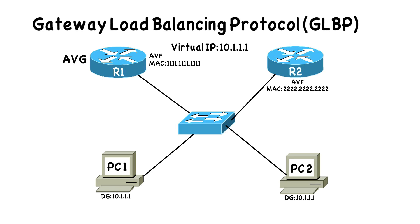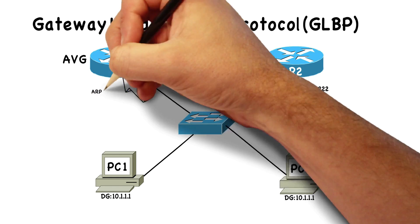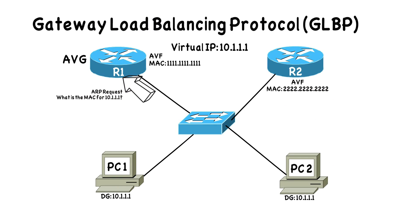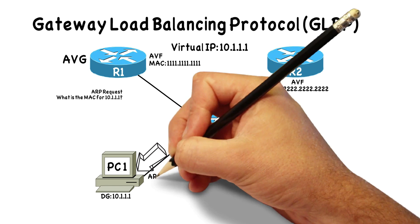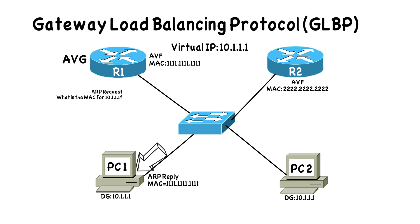To demonstrate how it works, consider PC1 on screen. It's going to send an ARP request up to router R1, because R1 in this example is acting as the AVG — the Active Virtual Gateway. That ARP request asks: what is the MAC address corresponding to 10.1.1.1, PC1's default gateway? R1, acting as the Active Virtual Gateway, responds saying the MAC address for 10.1.1.1 is 1111.1111.1111 — obviously a made-up MAC address to make this easier to visualize. It responds with the MAC address corresponding to an AVF. In this case, R1, in addition to being an AVG, is also an AVF, saying: here's my MAC address as an AVF, send your frames to me.